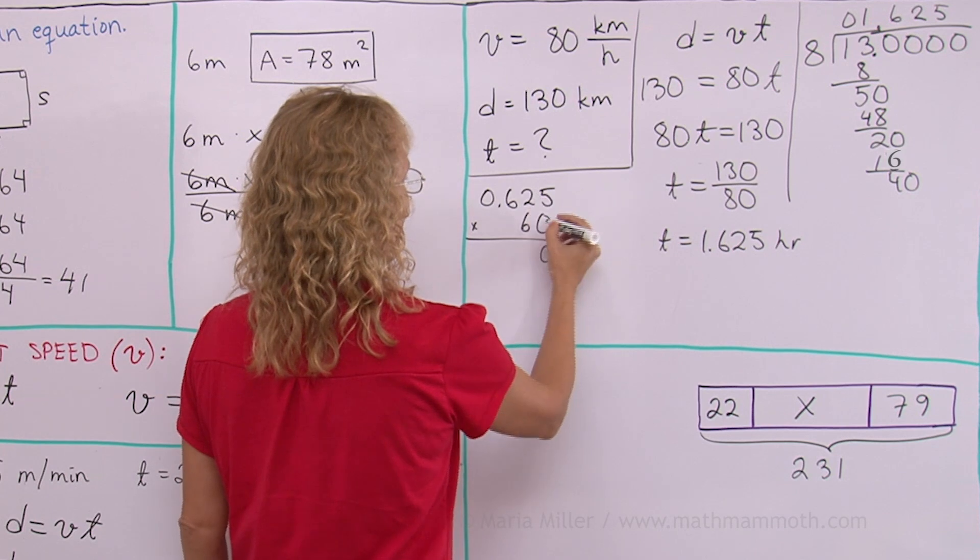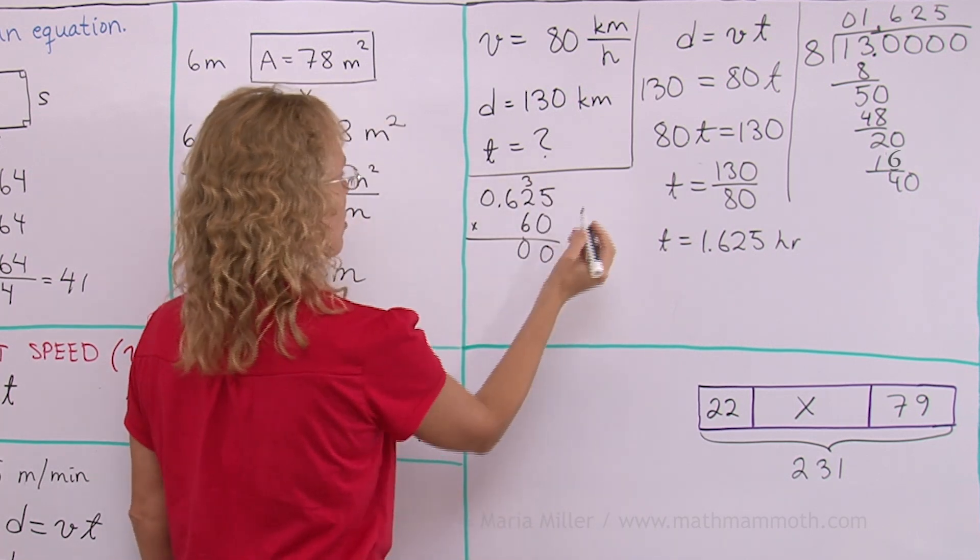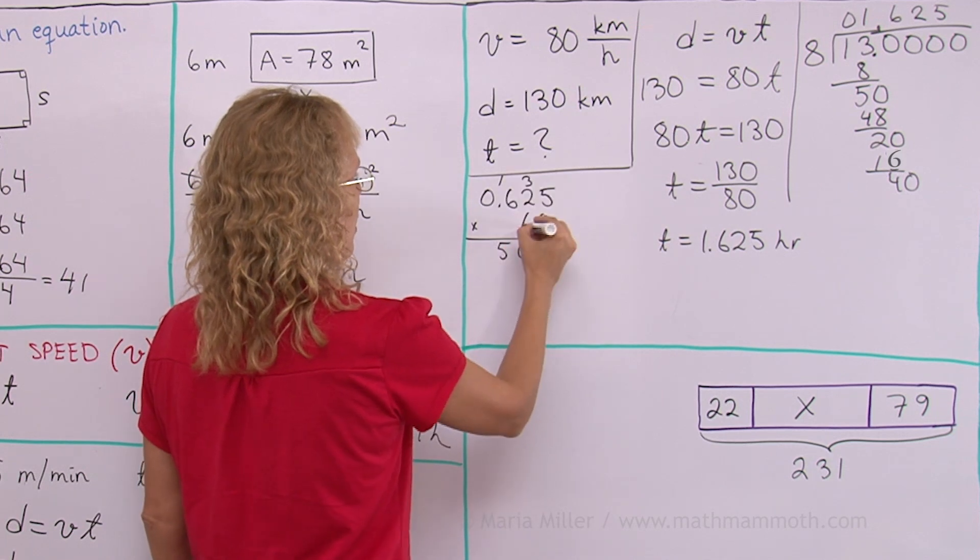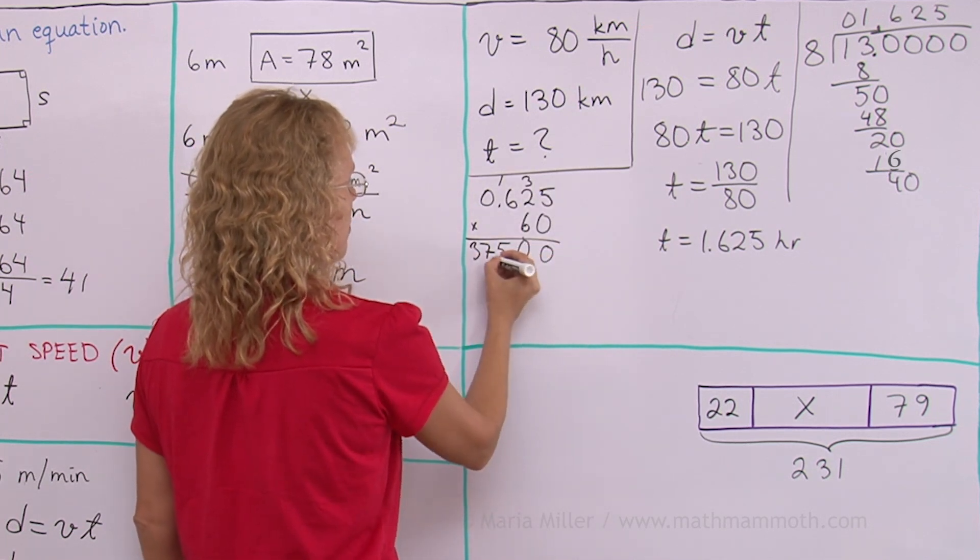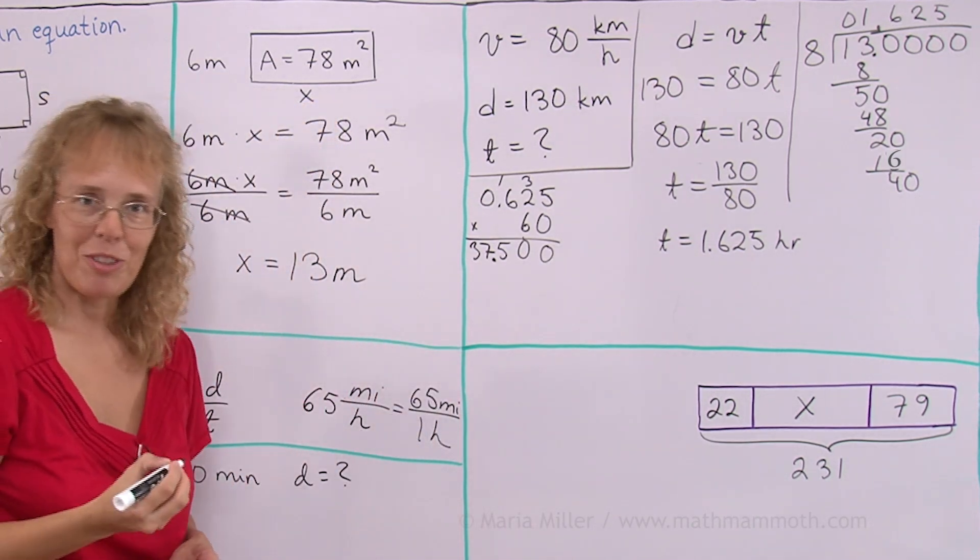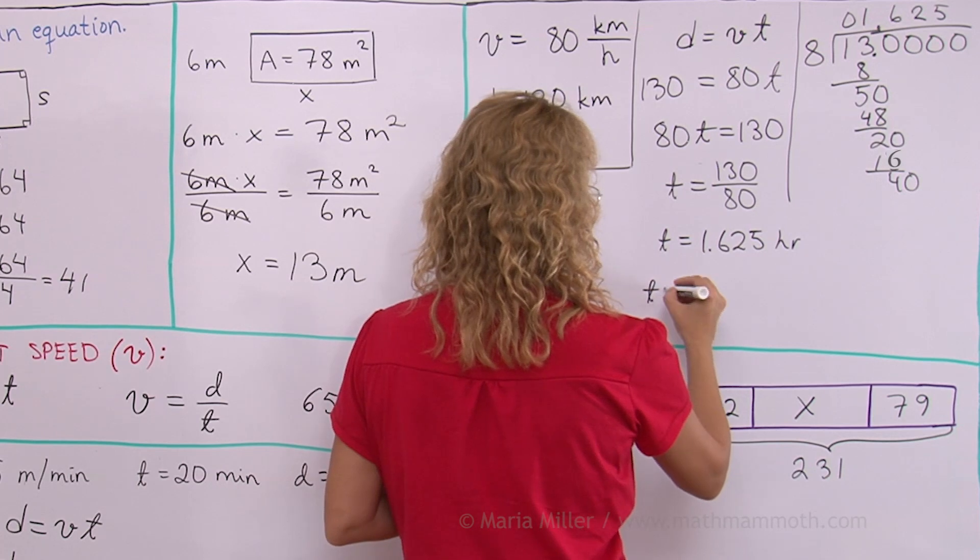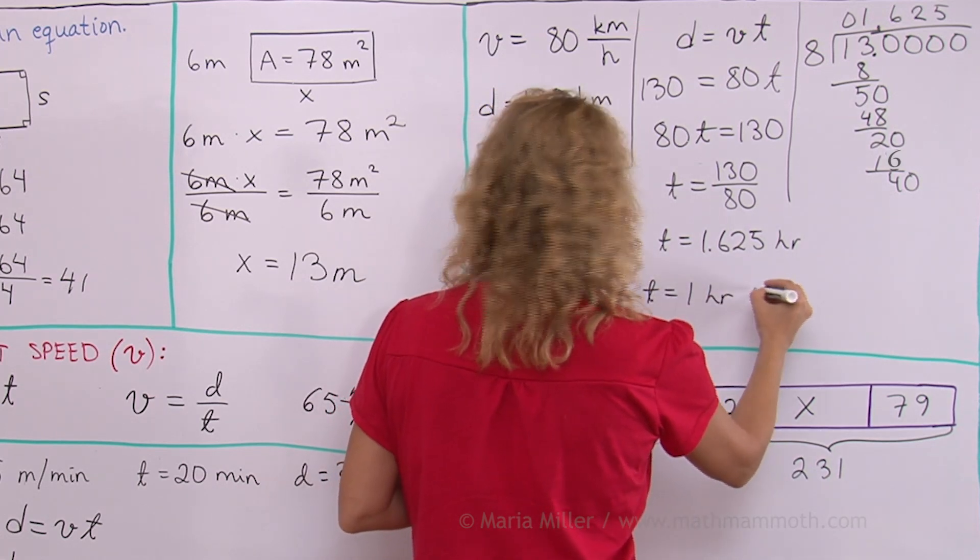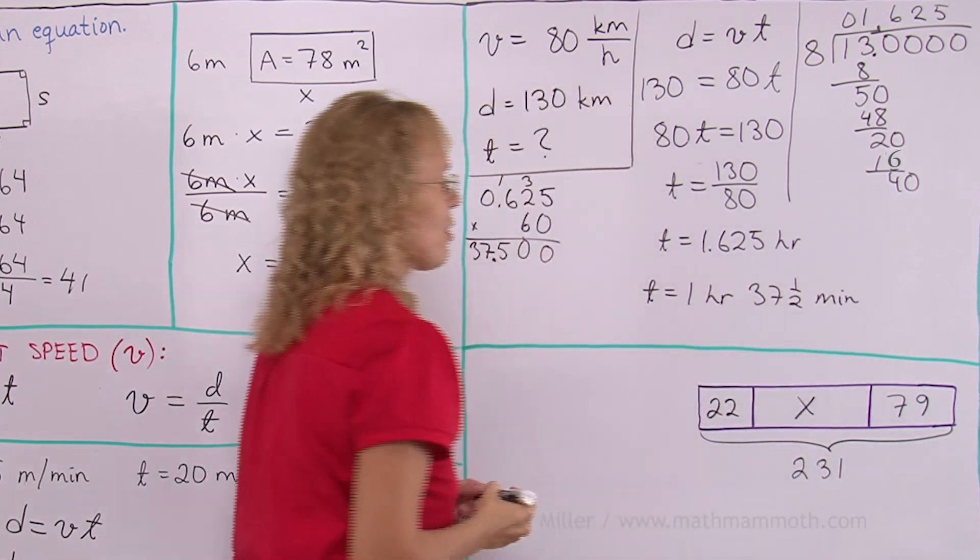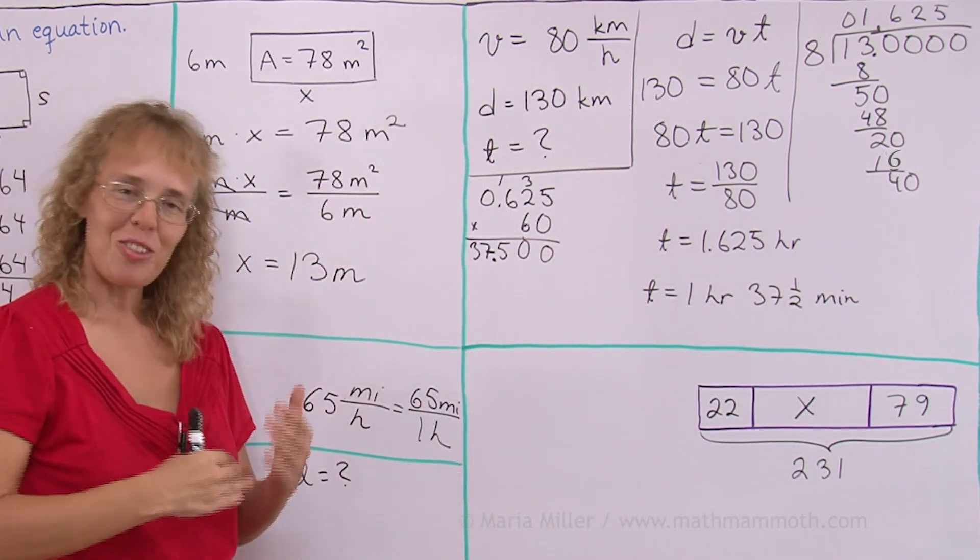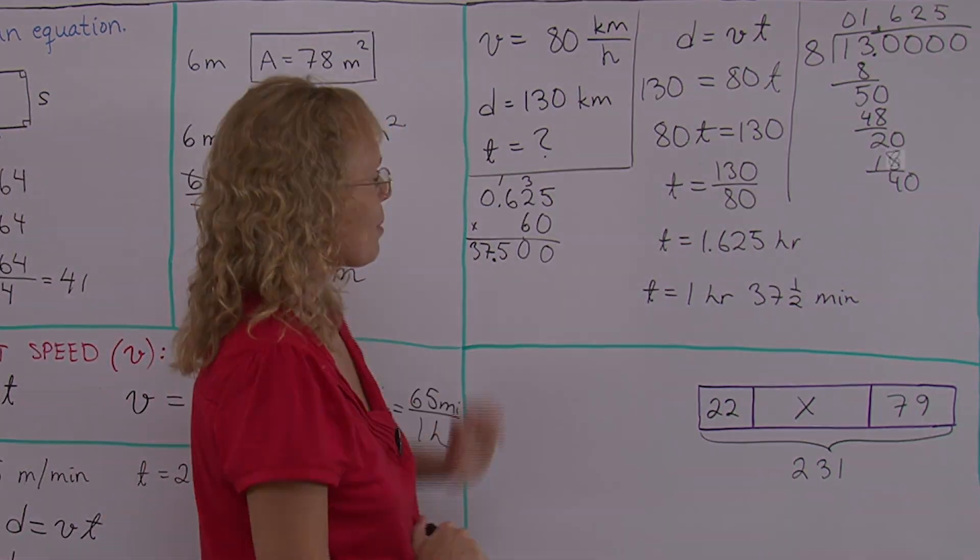5 times 0. Then I just go to 6 times 5. 30. 6 times 2 is 12. 15. And then 36, 37. That's 1, 2, 3, 3 decimals. 37.5. That's minutes now, remember? So that makes sense. T equals 1 hour and 37 and a half minutes. If the car is able to maintain the constant speed, which of course in reality never happens. But anyhow, that's the answer.